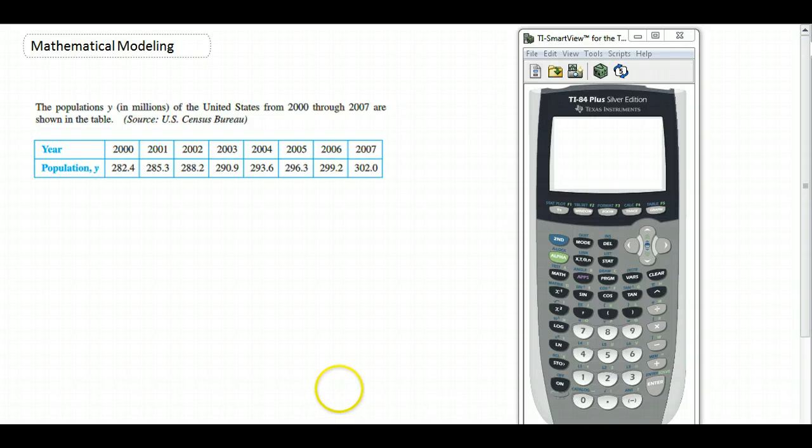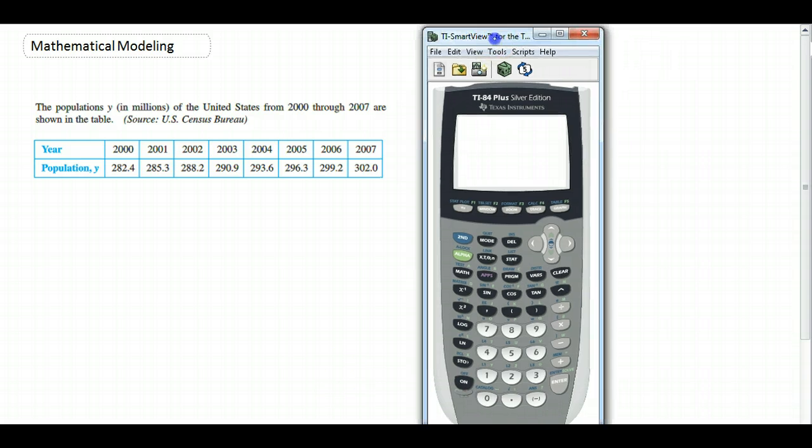We're going to talk about mathematical modeling, and the first thing we're going to cover is getting a linear regression equation of some data using your calculator. I've already entered these numbers into my L1 and L2, and you notice that I'm letting the year 2000 equal zero, the year 2002 equal two, and so on. These numbers are the population in millions in the United States through the year 2000 to 2007.